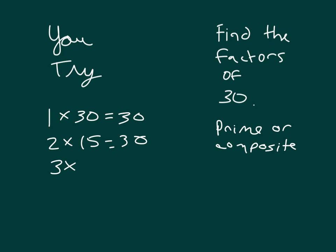Then 2 times 15. 3 times what? 10 gives you 30. Can't be 4. We do get 5 though, because 5 times 6 equals 30. We got to 6 again, which is already there, so we know we're done.